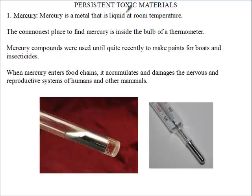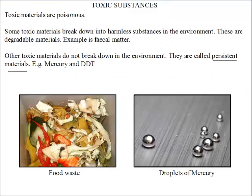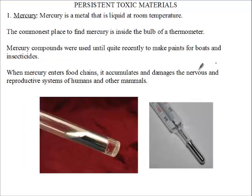The first persistent toxic material we're going to take is Mercury. Over here we see the droplets of Mercury. Now we know Mercury is a planet, but we also have Mercury that is an element. Mercury is a metal, but it is liquid at room temperature, just as you can see in this test tube.